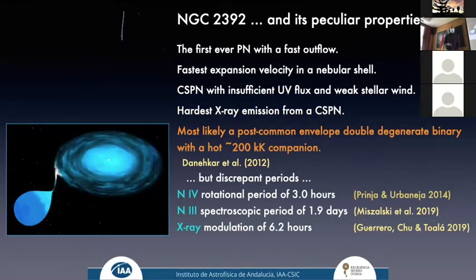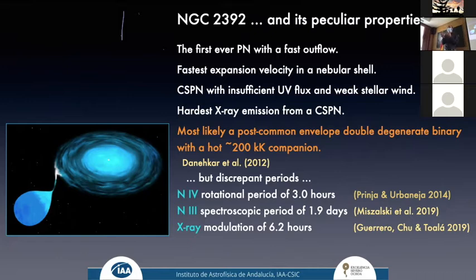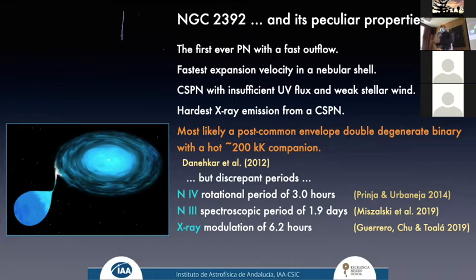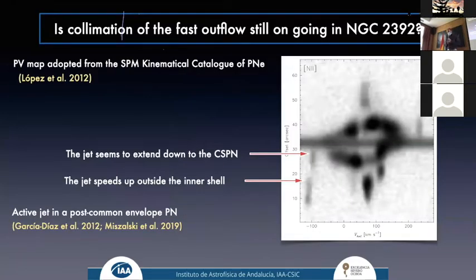Many authors, including myself, believe this is a real post-common envelope double degenerate binary system. The visible central star is evolving toward the white dwarf phase, and there is an unseen very compact white dwarf companion, probably at a temperature of 200,000 K, providing the ionizing power to the source. We also see X-ray modulation, suggesting accretion onto this companion. There are different periods depending on the spectral lines and X-ray modulation used, so the binary period is still uncertain.